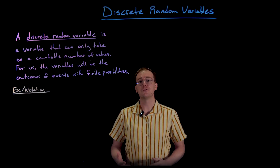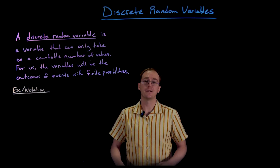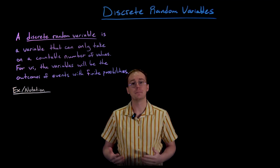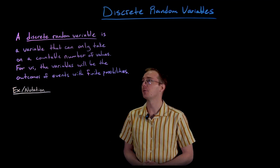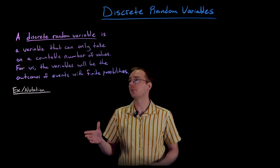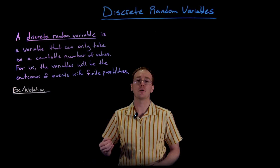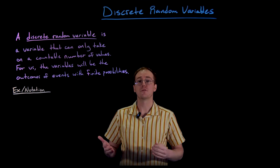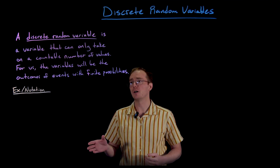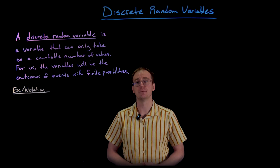Hello everyone, welcome back. In this video I want to talk about discrete random variables. A discrete random variable is a variable that can only take on a countable number of values. For us, the variables will be the outcomes of events that have just a finite number of possibilities.